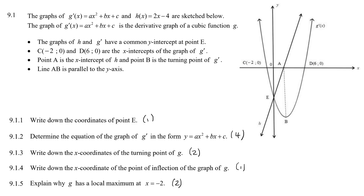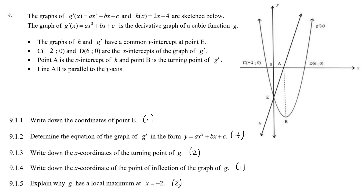The graphs of g prime (the first derivative) and h are sketched below. The graph of g prime is the derivative of a cubic function. If you have a cubic function and take the first derivative, you end up with a parabola. The graphs of h and g prime have a common y-intercept at point e, c and d are the x-intercepts, point a is the x-intercept, and line ab is parallel.